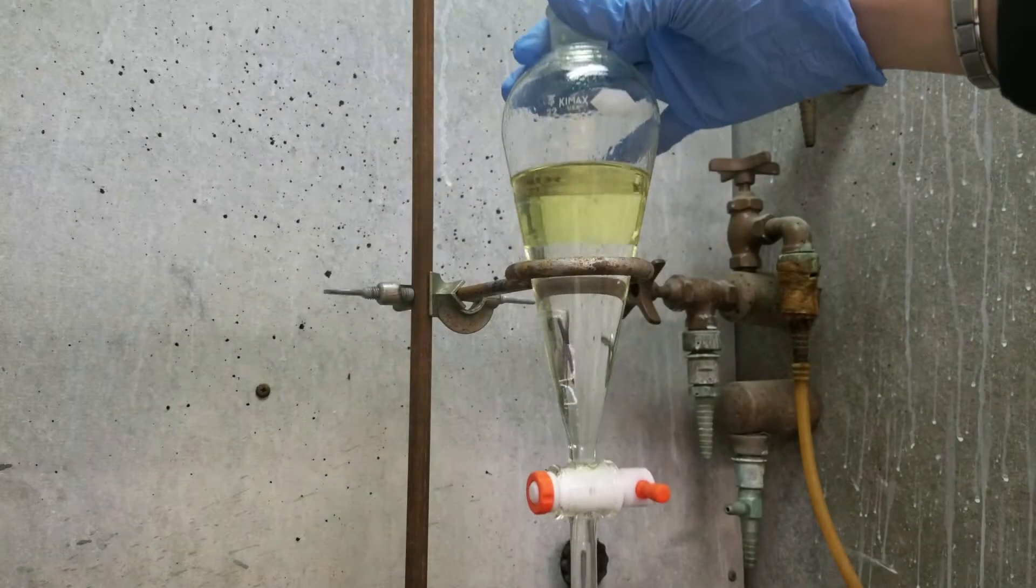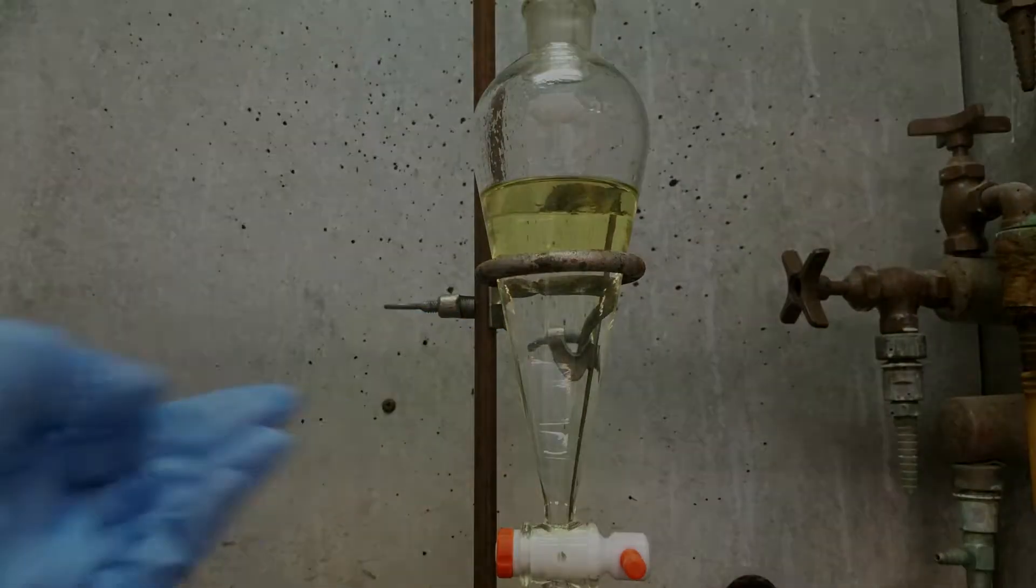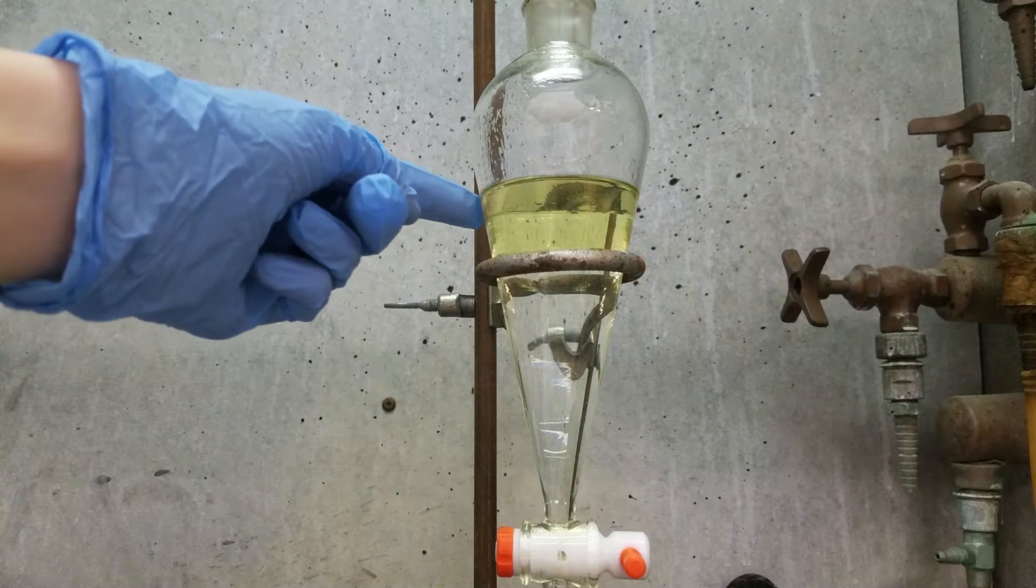Place the separatory funnel back onto the ringstand and wait for the two layers to form. In this case, the denser solvent is on the bottom while the less dense solvent is on the top.